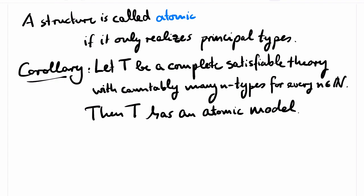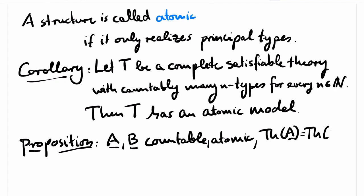Atomic models have many nice properties. I will mention one that will be important later. If we have two countable atomic structures that have the same theory, then they must be isomorphic. This can be shown by a back-and-forth argument, which I leave to the reader.